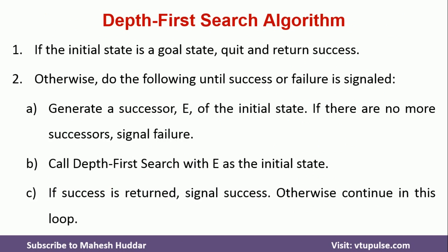In the first step, we will check whether the initial state is the goal state. We want to go from the initial state to the goal state. If the initial state is already a goal state, we will quit and return success. Otherwise, we will do the following steps unless and until we reach either success or failure is signaled.